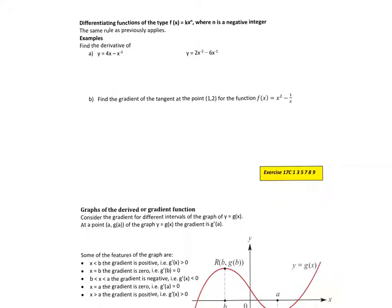So now if we're going to find our derivatives with negative indices or even fractional indices, I might do one or two fraction ones. It's exactly the same process, but we've just got to get used to working with negative numbers, adding and subtracting one from negative numbers or adding and subtracting one from fractions.